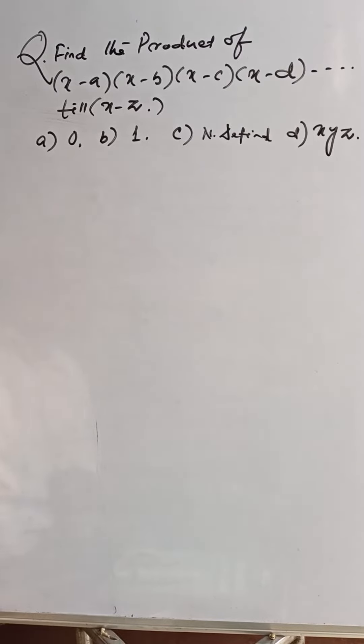Find the product of x minus a into x minus b into x minus c into x minus d till x minus z. What is the result? The options are a) 0, b) 1, c) not defined, and d) x, y, z. That is a very funny question.